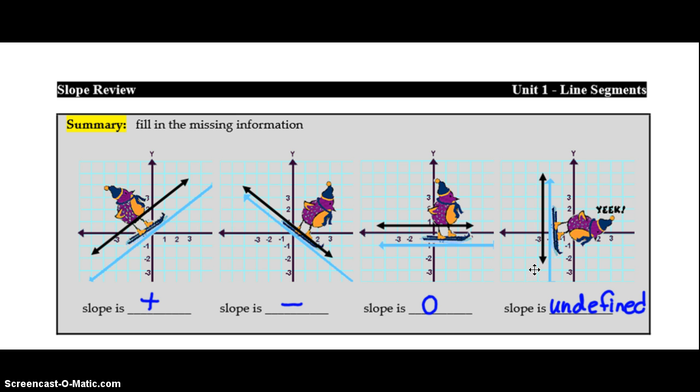Vertical lines on the other hand they have lots of rise and no run. So when we divide anything by zero we'll get that fancy error message in our calculator. So we refer to that as undefined.